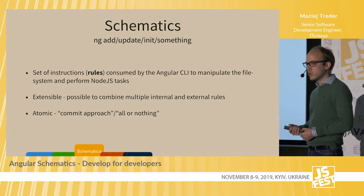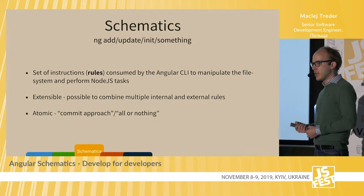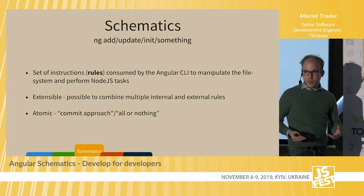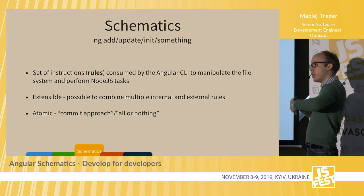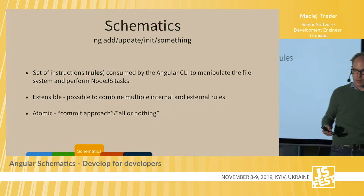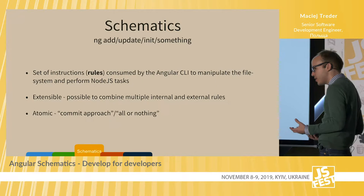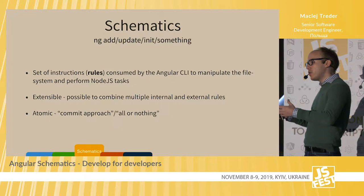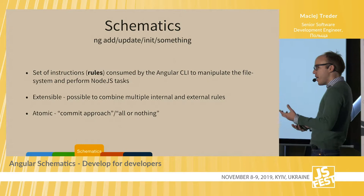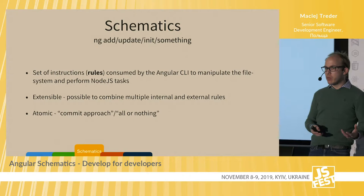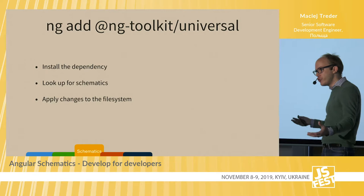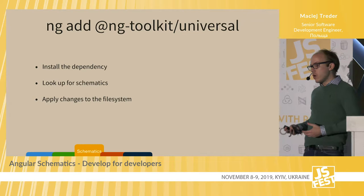So those are our use cases, and here comes schematics. How many of you have used schematics before? One person. How many of you are using Angular CLI? All of you — so all of you are using schematics. Because what Angular CLI is doing is picking up the schematics from the library, looking at the instructions, and applying them to the file system. The great thing is that those rules are extensible — you can take a couple of them and merge into one big rule. Moreover, atomicity: they work like a database transaction — all or nothing. If something fails, nothing will be applied, so your file system and project won't be broken.